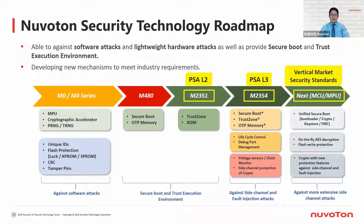Here is a NemoTone security technology roadmap summary. Our MCU and MPU products can help you to defend against software attacks and lightweight hardware attacks, as well as provide secure boot and trusted execution environment. We are also monitoring the new industrial requirements to develop new mechanisms to meet future security standards. We started from the M0-M4 series with the basic memory protection unit, cryptographic accelerator, PRNG/TRNG, unique ID, flash memory protection mechanism, and CRC tampering pins. These functions with our existing M0-M4 products can defend against software attacks.